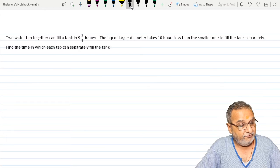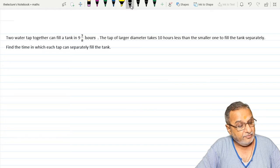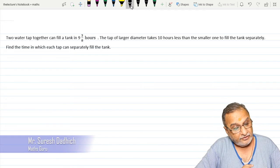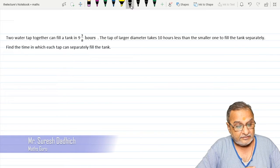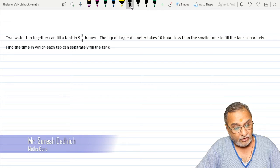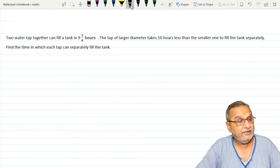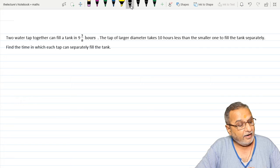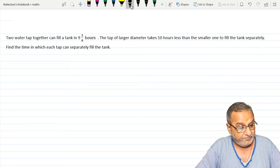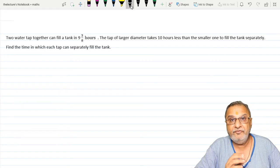Two water taps together can fill a tank in 9 3/8 hours. The tap of larger diameter takes 10 hours less than the smaller one to fill the tank separately. Find the time in which each tap can separately fill the tank.